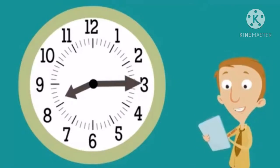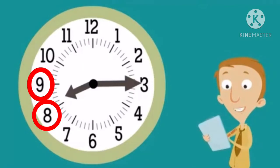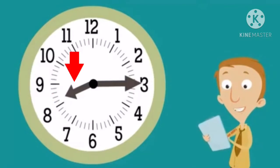Let's look at the analog clock. What time is it according to this clock, children? First, let's look at the hour hand. The hour hand is between the numbers again. It is between which number? Yes, it is eight and nine. Remember, children, when the hour hand is between two numbers, the hour is the earlier number. So the hour is eight.